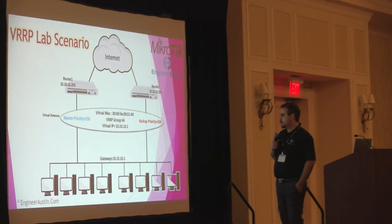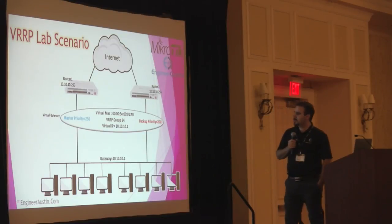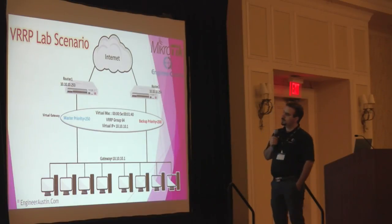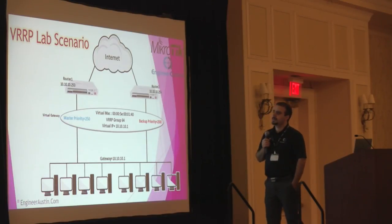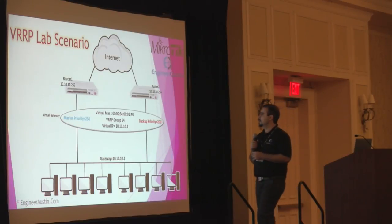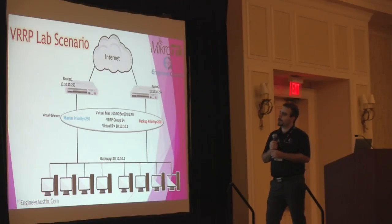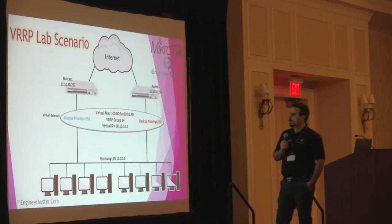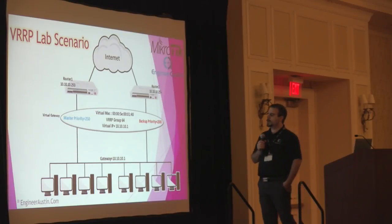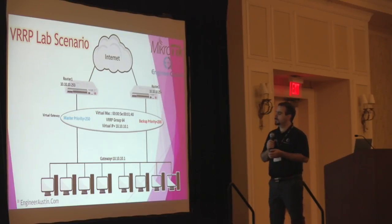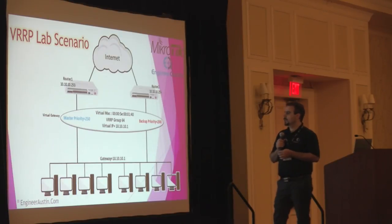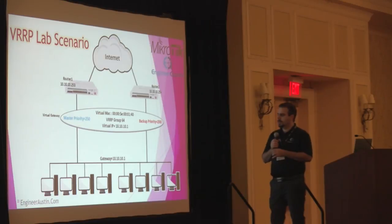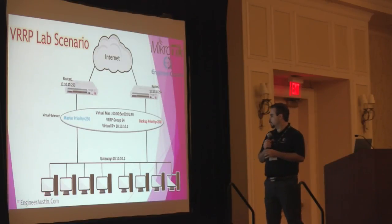Here is our lab scenario. We have a host with gateway 10.10.10.1, and two physical routers with IP addresses 10.10.10.253 and 10.10.10.254. We set the priority for the master router to 250 and for the backup to 200. The virtual MAC address last part is 40 because the VRRP group ID is 64, and our VRRP virtual IP address is 10.10.10.1, which we set as the gateway on those hosts.